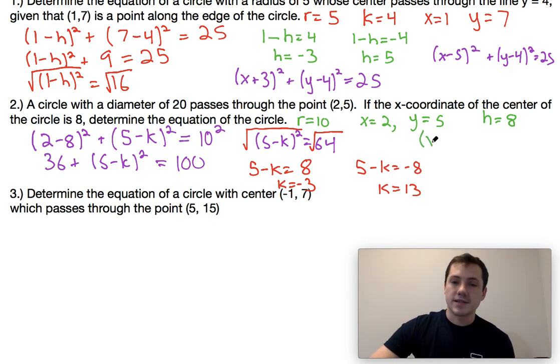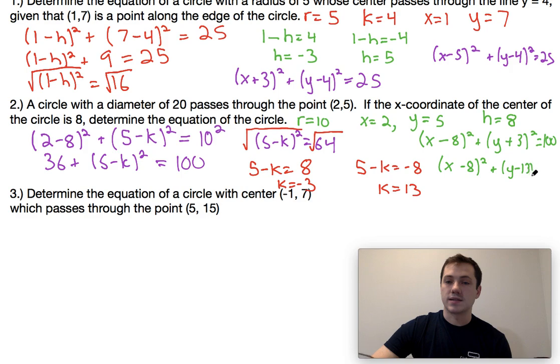Thus, we end up with 2 equations. We have the case where we have x minus 8 squared plus y plus 3 squared is equal to 100, or we have the case where x minus 8 squared plus y minus 13 squared is equal to 100. Again, either one of these are acceptable answer choices. That's basically all you need.